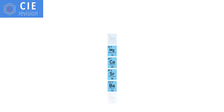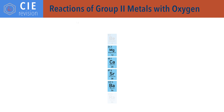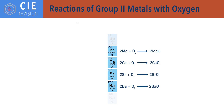Group 2 metals react with oxygen to form group 2 metal oxides, with a general reaction of metal plus oxygen to metal oxide: 2M + O₂ → 2MO. The reactions are vigorous when the metal is heated in oxygen.